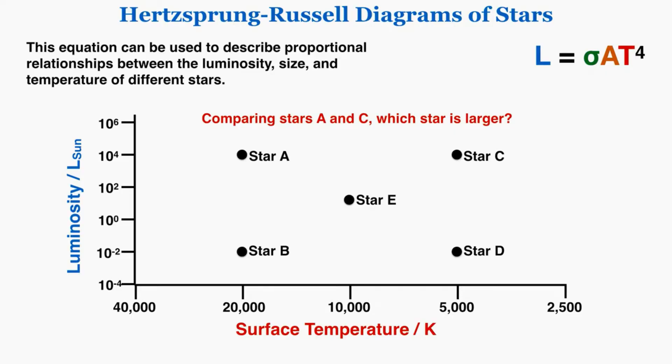This first question says comparing stars A and C, which star is larger? I can see A is in the top left, C is in the top right. I can compare their luminosity and see that they have the same luminosity, and I can compare their temperatures and see that star A has a greater temperature than star C.